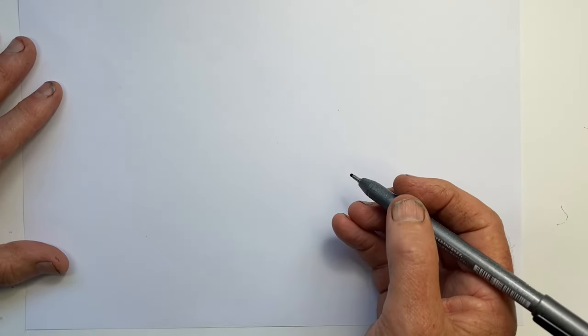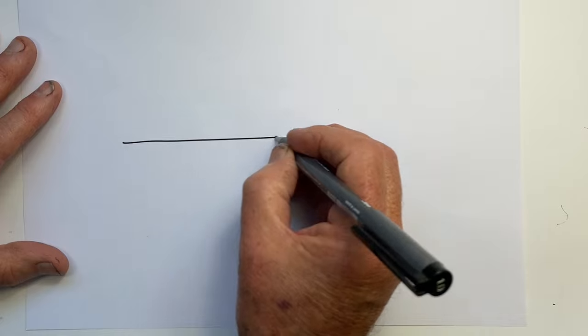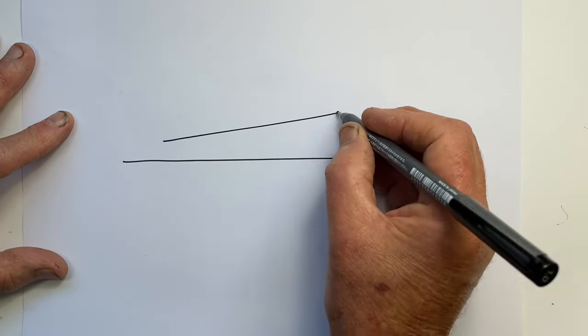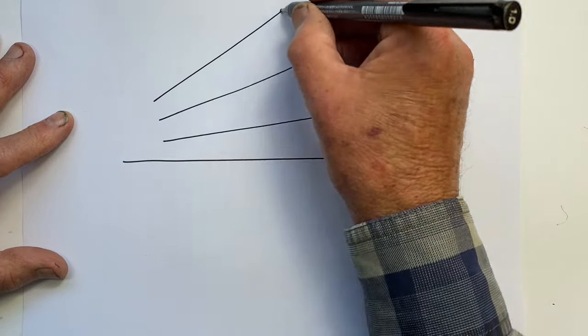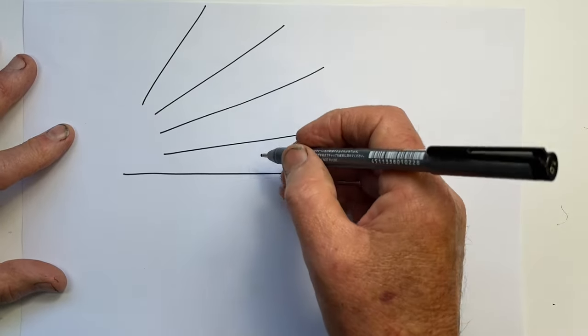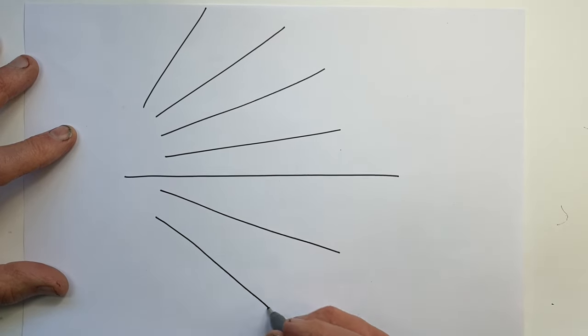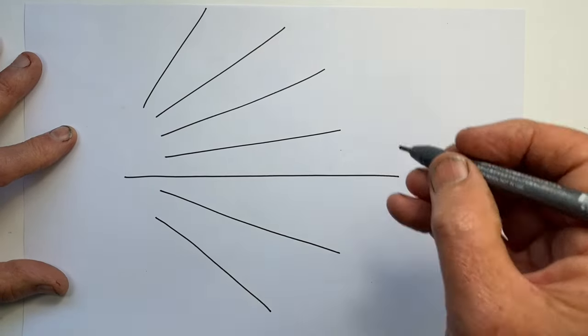The helpful thing to realize when we draw is once we've established eye level, the lines above eye level become increasingly angled as they move above eye level. And below eye level, they become increasingly angled in the opposite direction.